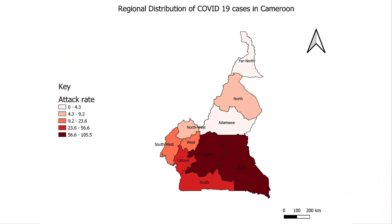In part 4, we ended up where we had represented our first variable, the attack rate on our map, and had it exported as an image.